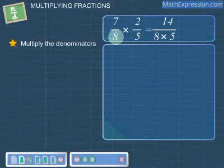Next, multiply the denominators. So, we multiply 8 with 5. This gives 40. Now, we have the fraction 14 over 40.